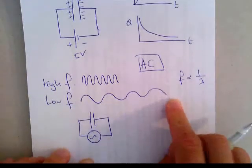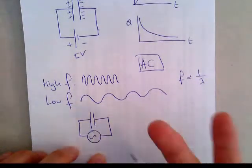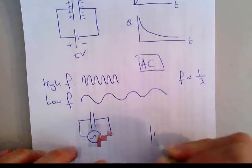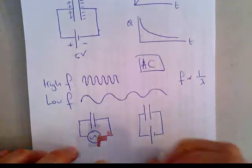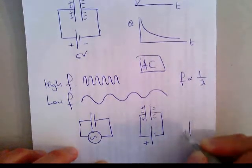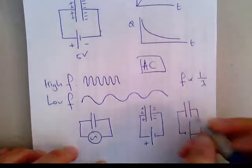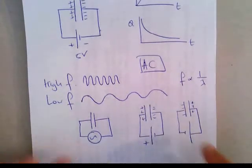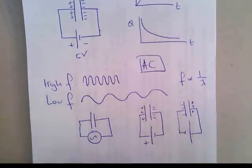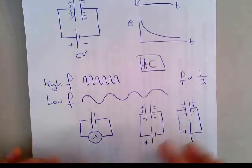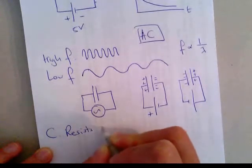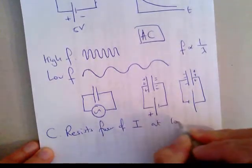When you have a low frequency, it's like you have a DC supply that is changing polarity very slowly. So you have time for negative charges and positive charges to build up on each plate. Then when you switch the polarity of your supply, the opposite happens. So when you have a low frequency signal, the capacitor has time to charge up and it will start to resist the flow of current. The capacitor resists flow of current at lower frequencies.